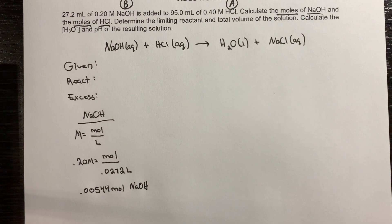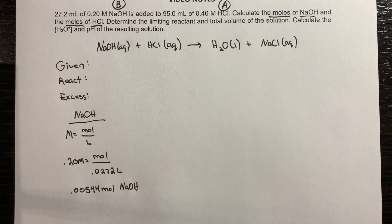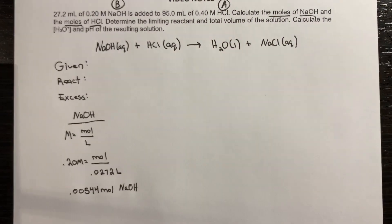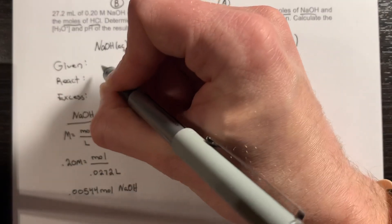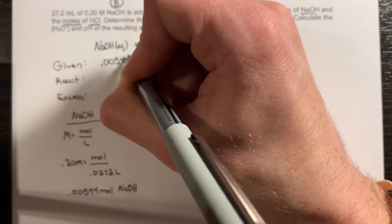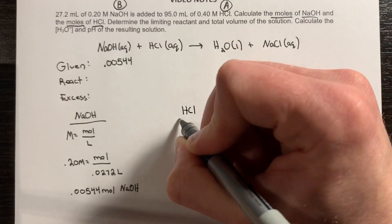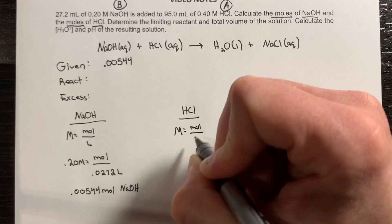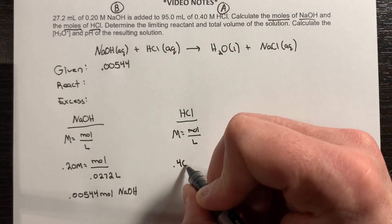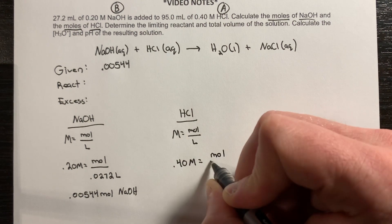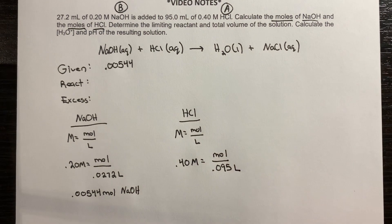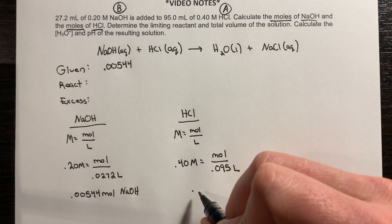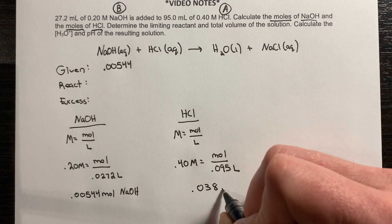I'll record the initial moles of base in my table. I'll do the exact same thing for the hydrochloric acid: molarity equals moles over liters. I was given the molarity of 0.40, and the volume is 0.095 liters. When I isolate for moles, I'm left with 0.038 mol HCl. I'll go ahead and plug this into my table.